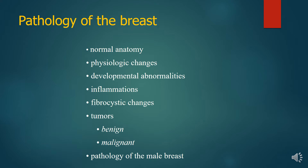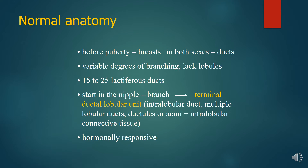Today we'll talk about the pathology of the breast. In normal anatomy, before puberty the breast in both sexes doesn't have ducts; there is a variable degree of branching, a lack of lobules, 15 to 25 lactiferous ducts. It starts in the nipple, branches, and leads to the terminal ductal lobular unit.